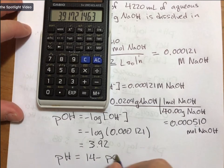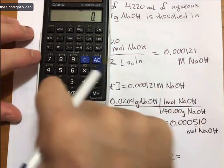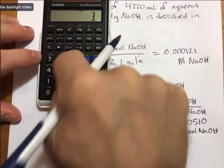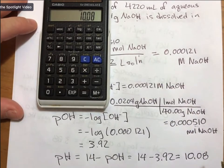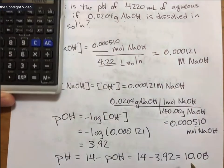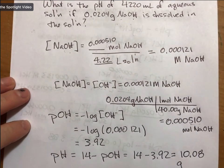pH is 14 minus pOH, and 14 minus 3.92 equals 10.08.